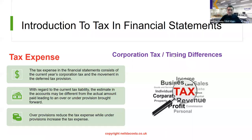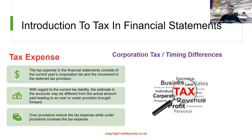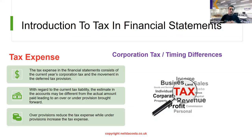Let's start off by looking at what tax is in the financial statements. When we prepare financial statements we have the profit and loss account or the statement of profit and loss, and we have the balance sheet or the statement of financial position. With regard to the tax expense in the profit and loss account, the tax expense consists of the current year's corporation tax and the movement in the deferred tax provision.